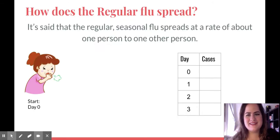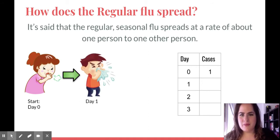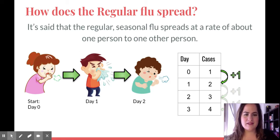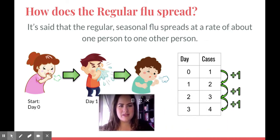So I thought it might be a good idea to talk about viruses. Let's talk about the regular flu, the one that happens every year. It's seasonal, and let's say it spreads at a rate of about one person to another person. So on day zero, just that one little girl is sick. We have one case of the flu. Then she spreads it to her brother, so by day one we have two cases. Then he spreads it to his buddy, and by day two we have three cases. To get from one case to two cases, we only added one case. To get from two to three, we just added one. So we have added one case each time, plus one, plus one, plus one.